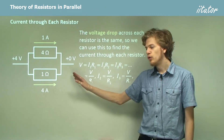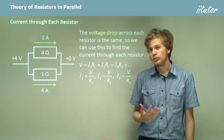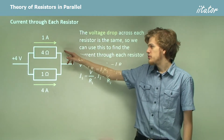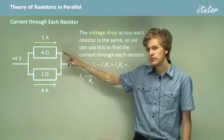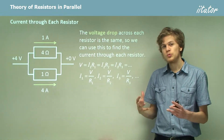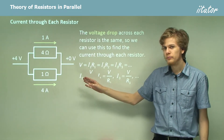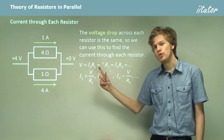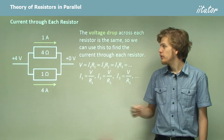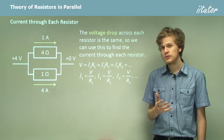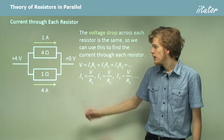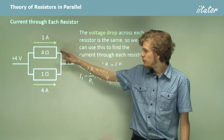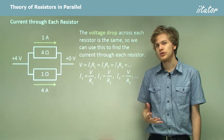In this diagram we have a voltage drop of four volts across each resistor. So if V equals IR and the top resistor has a resistance of four ohms, then to get two numbers which multiply together to form four, the other number will have to be one — so one amp times four ohms equals four volts. Similarly, one ohm times four amps equals four volts. So for each resistor the voltage drop across them is the same.